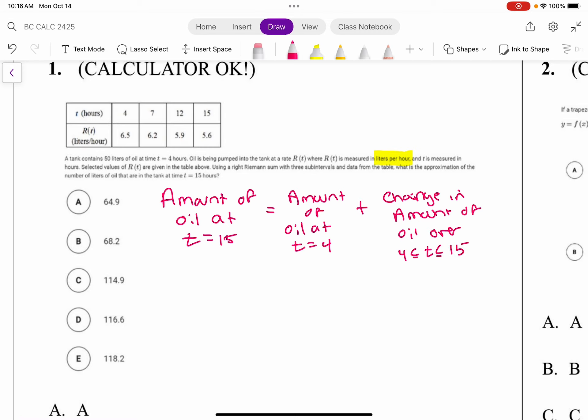Okay, so generally that's what we mean. How about the amount of oil at t equals 4? They told us, right, it's 50 liters.